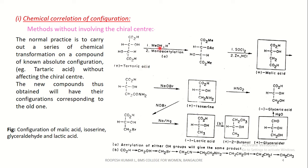Tartaric acid on reaction with methanol in acid — that is, methylation — all acid groups get methylated. On controlled acetylation, only one hydroxy group gets acetylated. This on further chlorination and in the next step reduction gives malic acid. From this we can now know the configuration of malic acid using the known configuration of tartaric acid.